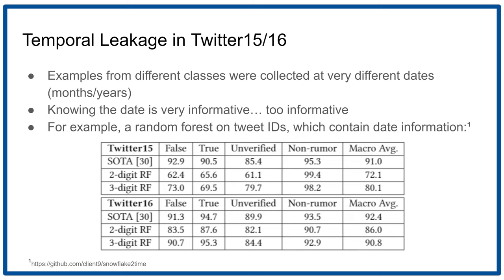Now these are balanced datasets, so what we would expect is that knowing the date wouldn't really be better than random — something like 25% F1. But in fact, we see that knowing the date gives much, much more information than that.